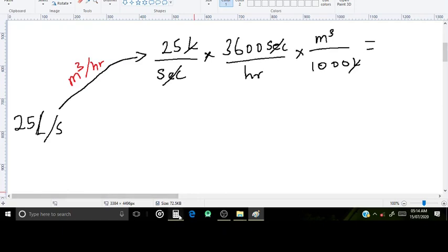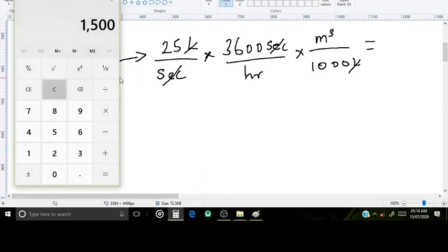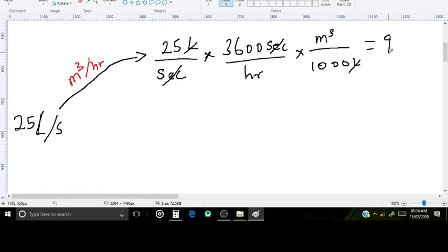Let's type the values into a calculator. We have 25 times 3600, which is 90,000, divided by 1000. So we have 90 cubic meters per hour.